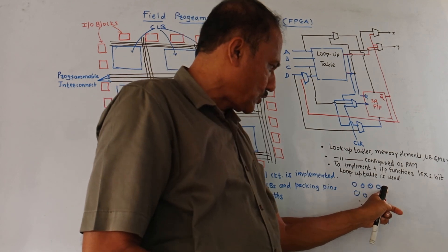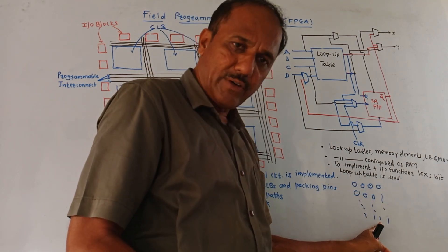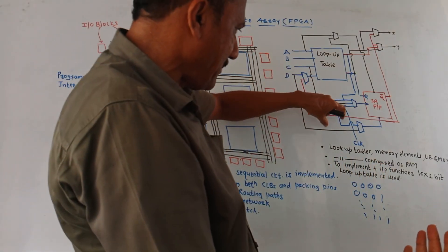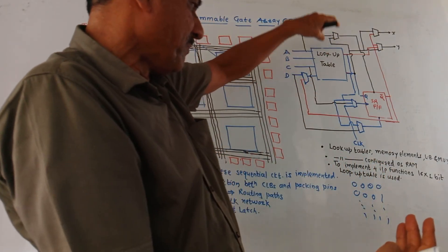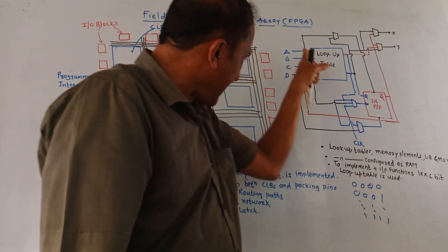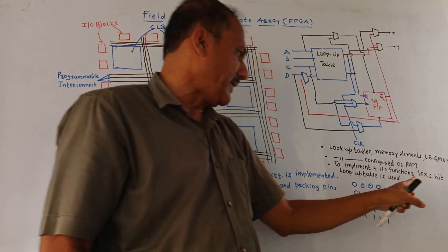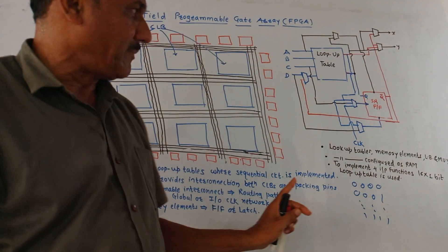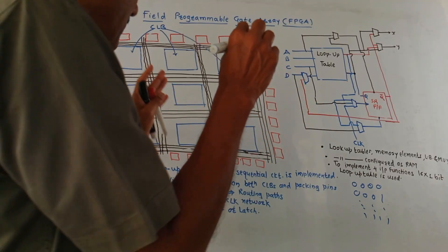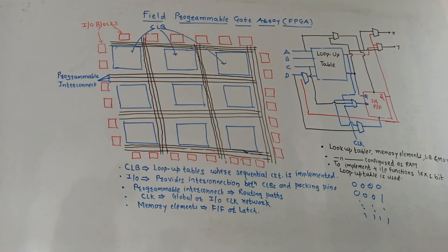Since we are considering 4 inputs, the entries will be from 0,0,0,0 up to 1,1,1,1, and the corresponding output is designed. That is the major function of a Lookup Table. To implement 4-input functions with inputs A, B, C, D, we need to make use of a 16×1 bit Lookup Table. So this is about the architecture of Field Programmable Gate Array.